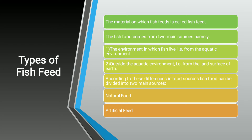In the extensive medium, the whole feed is covered by natural resources. Fish food comes from two main sources: first, the aquatic environment in which fish live, and second, outside the aquatic environment — from the land surface of the earth. According to these differences in food sources, fish food can be divided into two main categories: natural food and artificial food.